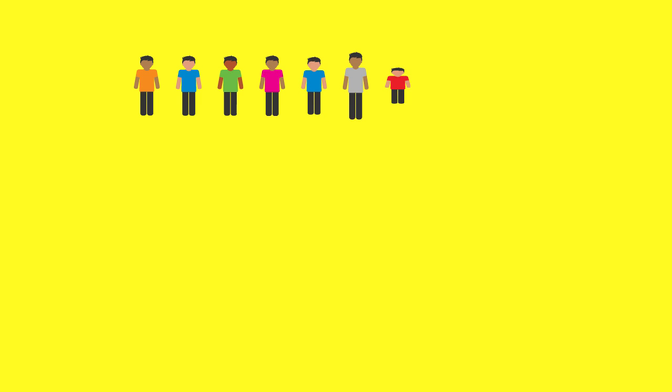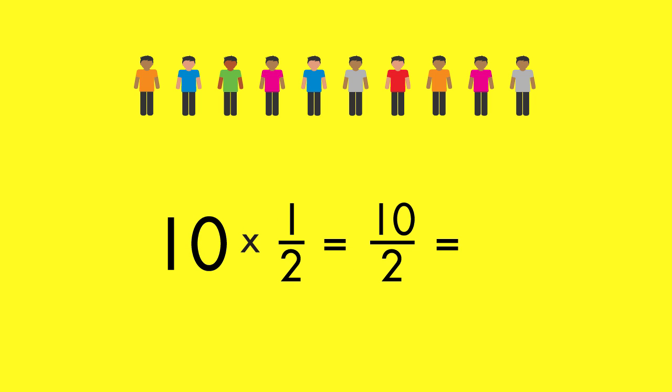When you multiply a number, you are making it larger or smaller, or scaling it up or down. When you multiply by a fraction, the fraction will give you an idea of whether the number will get larger or smaller.